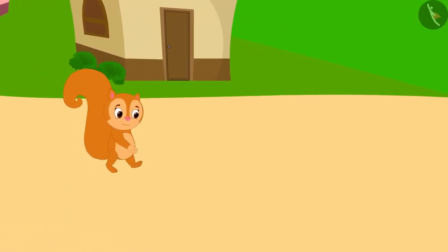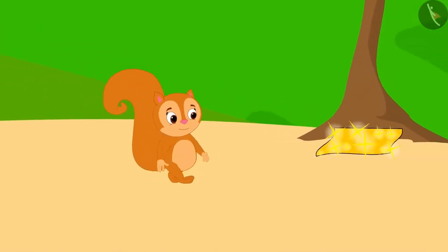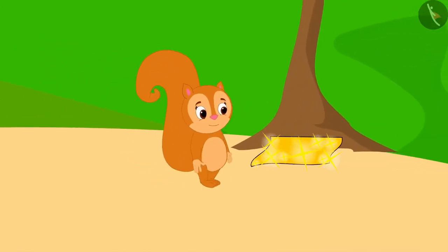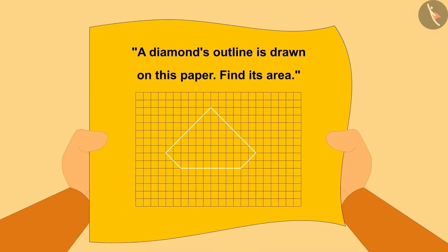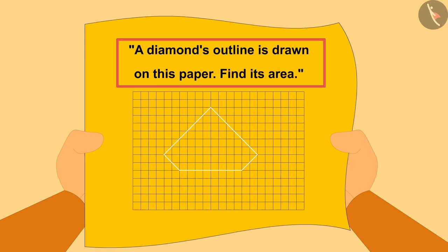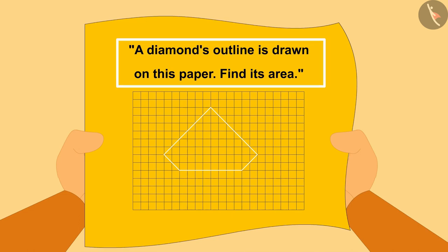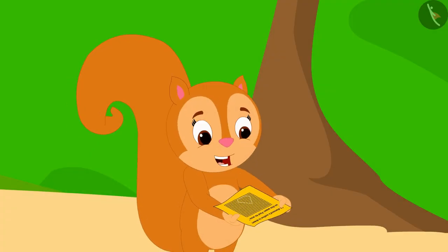Chanda was returning home from her shop. Just then, she saw a shiny paper under a tree. A diamond's outline is drawn on this paper — find its area. Chanda read the instructions written on the paper and got excited.